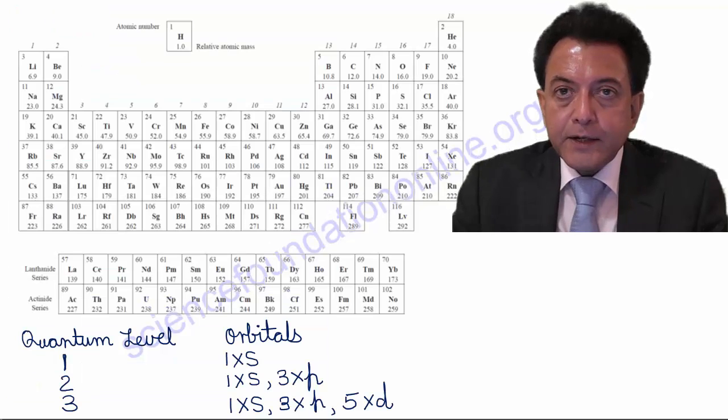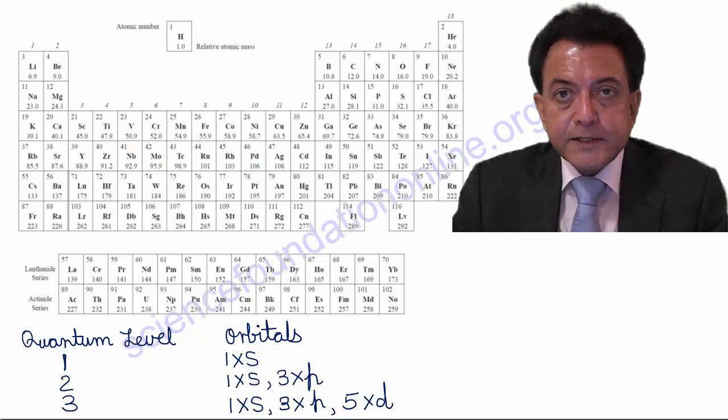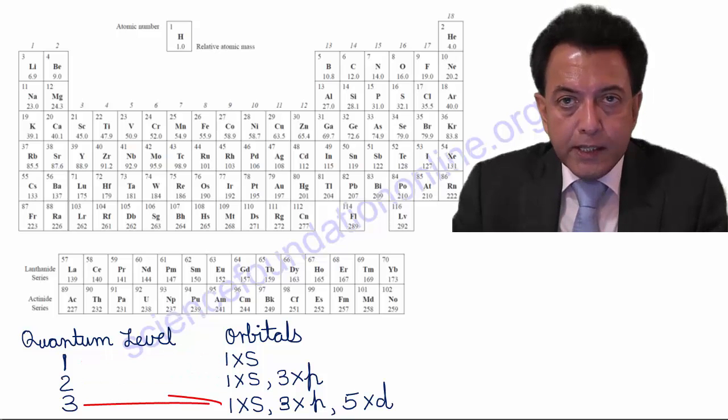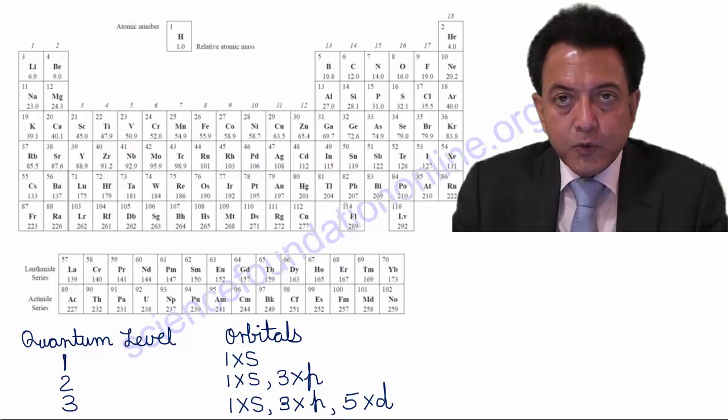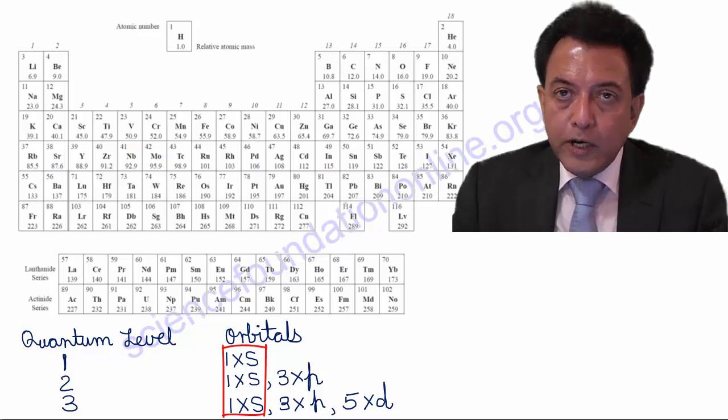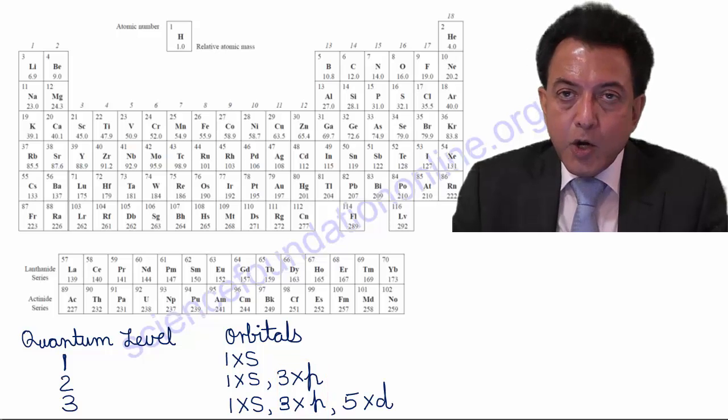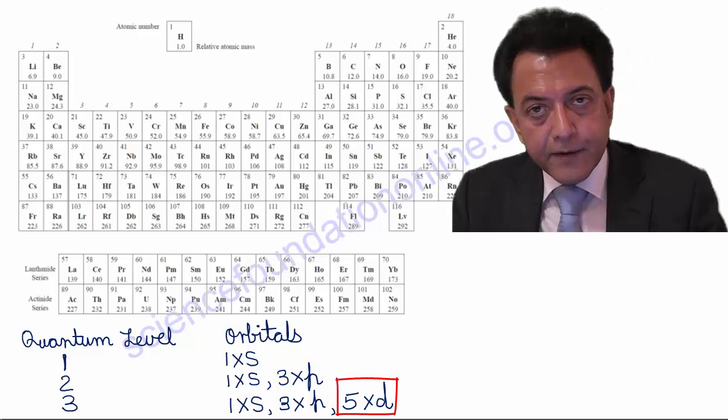Now, let's look at this periodic table, on which I have also written at the bottom the different types of orbitals, such as S, P, and D, that go with each quantum level or shell, and the number of orbitals of each of those types. For instance, S orbitals only come in lots of 1, while P orbitals come in lots of 3, and D orbitals come in lots of 5.